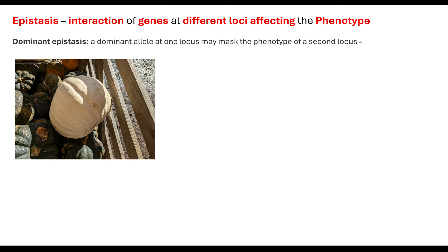So what do I mean by that? I went to the pumpkin patch at the weekend and I identified that there were different coloured pumpkins available. There are different genes involved in the colour we see in a pumpkin. So if we look at Gene A, if an individual has a dominant allele, that means there will be no pigment whatsoever being produced. If it is a recessive allele — so if they have two recessive alleles — then pigment will be put into the flesh of the pumpkin.